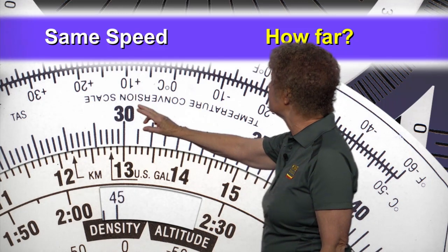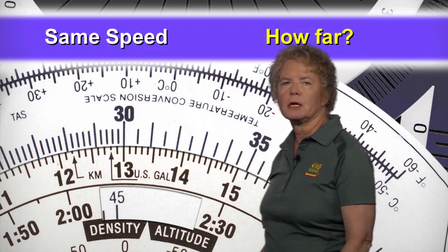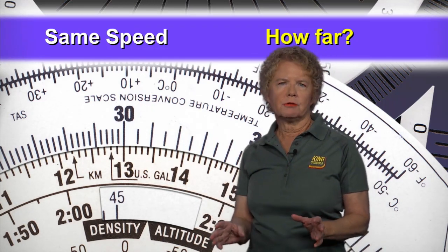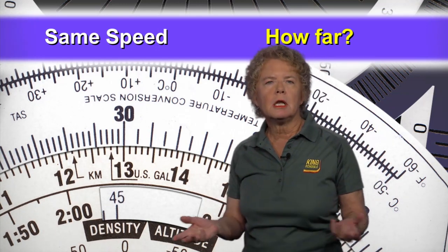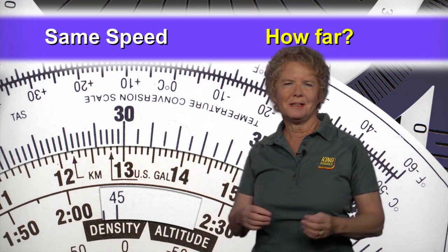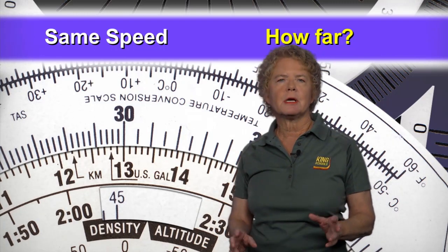And you'll be able to travel 30 miles in that 13 minutes. Once you have the ratio set on the flight computer of your speed, then you can work any kind of problem you need to. And in 13 minutes, we will have covered 30 miles.